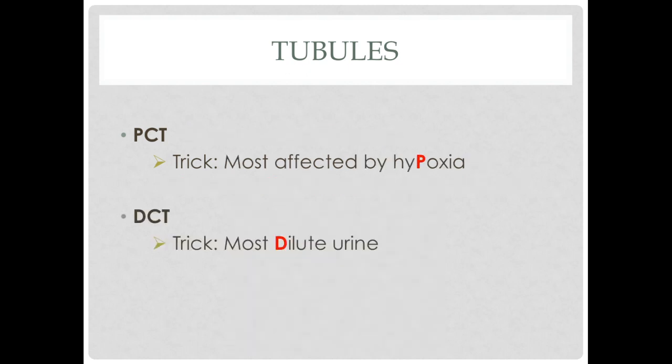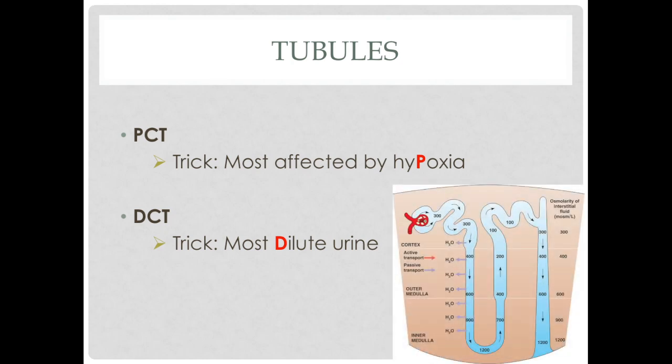The PCT will be the most affected by hypoxia — PCT, most susceptible to hypoxia. The distal convoluted tubule will contain the most dilute urine. If you look at an image of the tubules, at the very top there is less osmolarity, whereas at the bottom — for example, in the thin loop of Henle and in the collecting ducts — you'll have higher osmolarity and more concentrated urine.